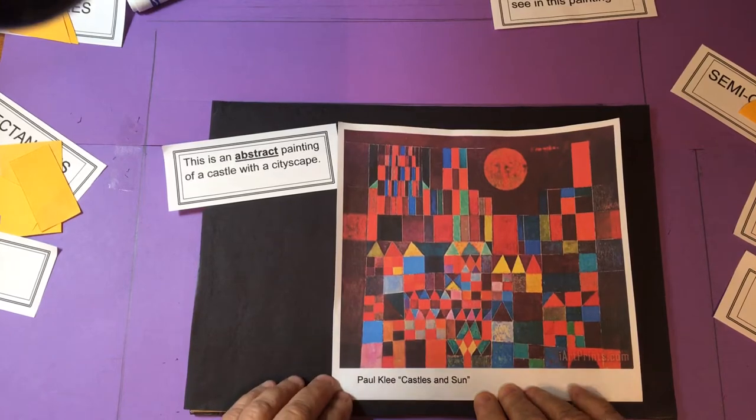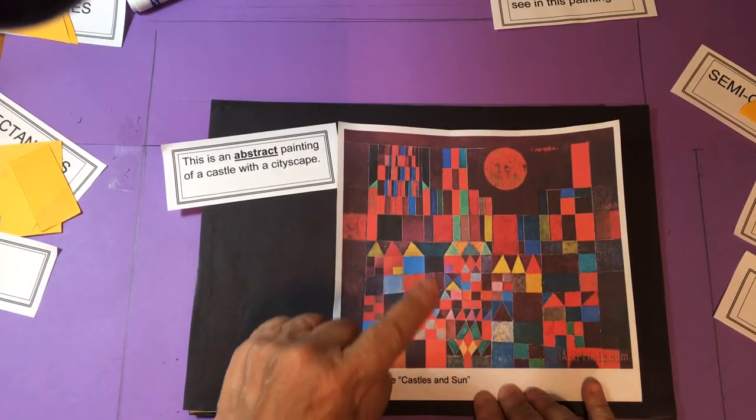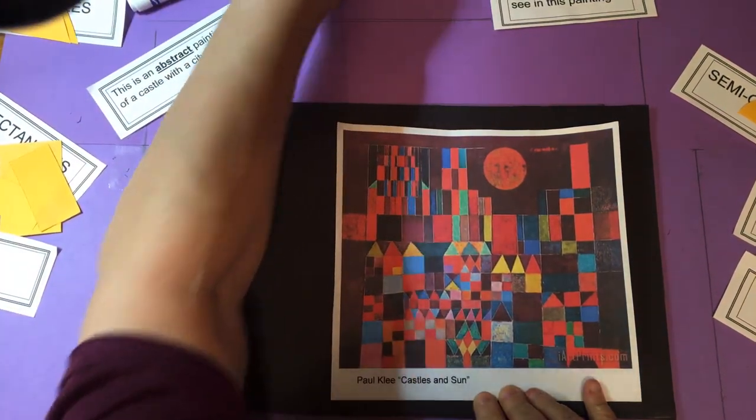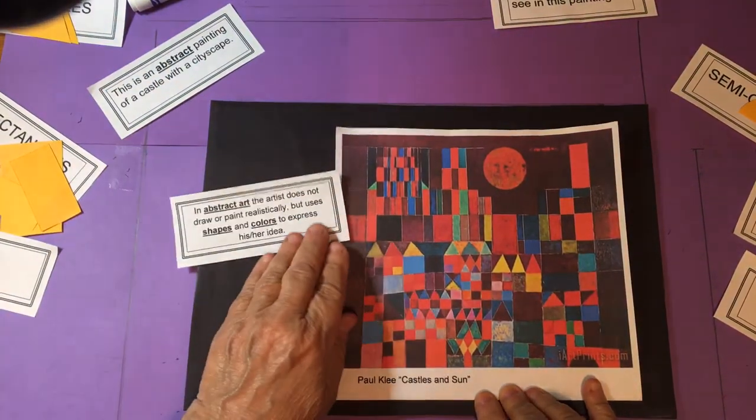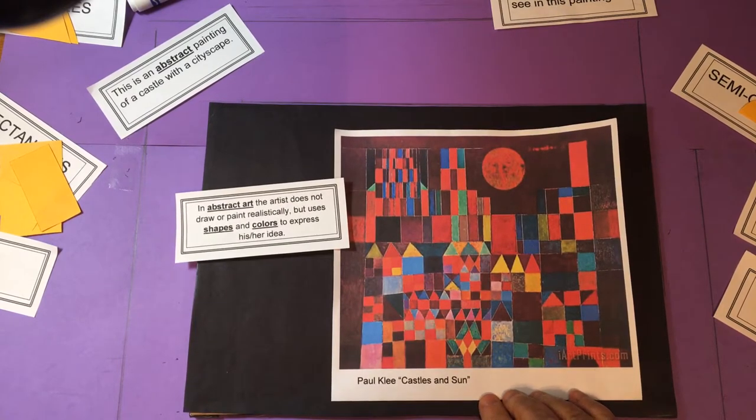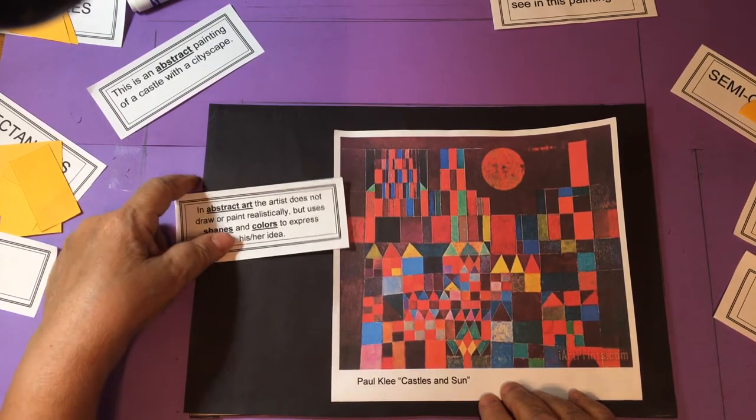Now you have to use your imagination, but I'm sure you can pick out where you think the castle is. It's abstract art. In abstract art, the artist does not draw or paint realistically, but uses shapes and colors to express his or her idea.